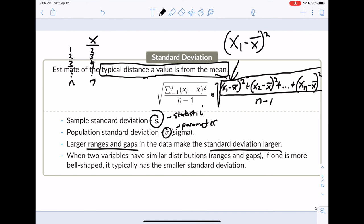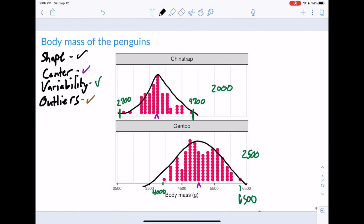Another thing is if two variables have similar distributions, if one looks more bell-shaped, it typically will have a smaller standard deviation. If it looks more bell-shaped. So if we go back to the slide just before here, we see that the Gentoo data points go over a larger range. The chinstrap ones are over a shorter range. We would expect the standard deviation for Gentoos to be larger than the standard deviation of chinstraps for their body mass distribution.